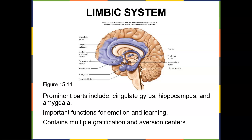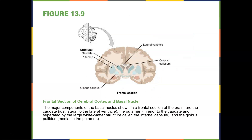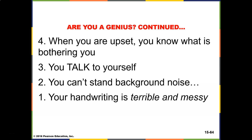The limbic system is quite important. Prominent parts include the cingulate, the hippocampus, and the amygdala. Important functions include emotion and learning, and it contains multiple gratification and aversion centers. The basal nuclei are deep masses of cerebral gray matter consisting of the caudate nucleus, putamen, and globus pallidus — involved in motor control.